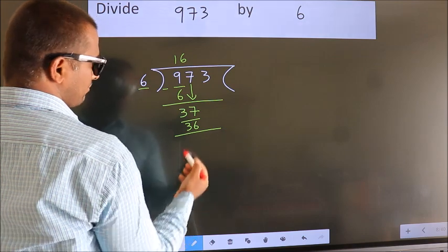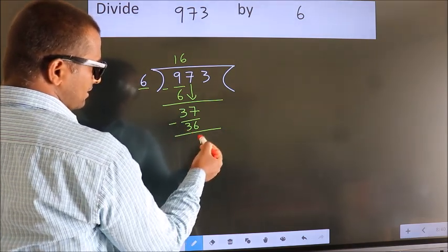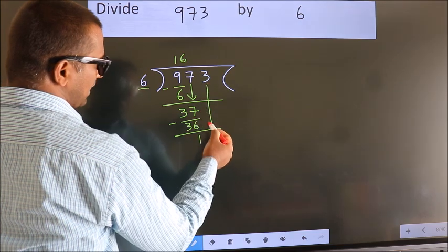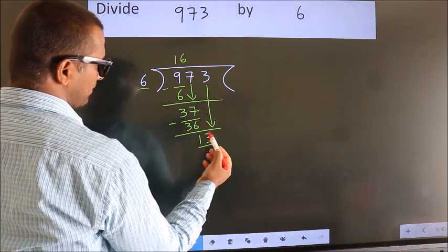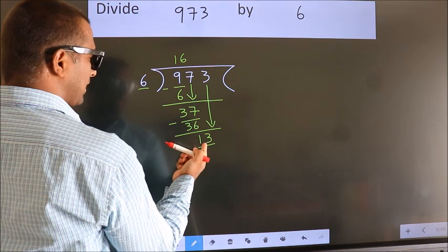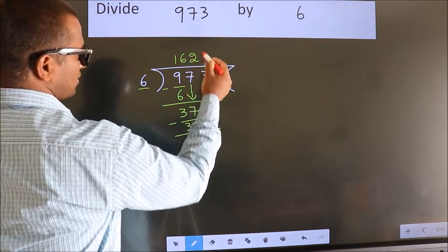Now we subtract and get 1. After this, bring down the next number, so 3 down, making 13. A number close to 13 in the 6 times table is 6 times 2, which is 12.